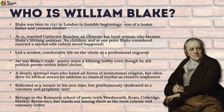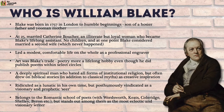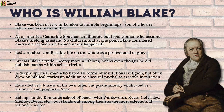William Blake was born in 1757 in London to humble beginnings. He was the son of a hosier father and a yeoman mother. At the age of 25 he married a woman called Catherine Boucher, who was an illiterate but loyal woman who became Blake's lifelong assistant. Together they had no children, and at one point Blake even considered bringing a second wife into the family.